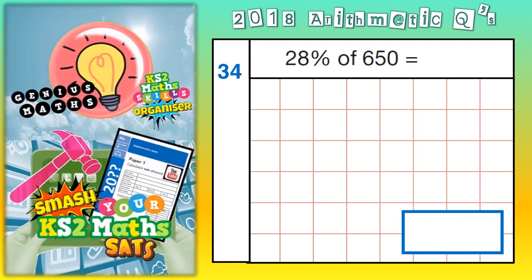Welcome, Arithmetic Ninjas, to question number 34. What is 28% of 650?